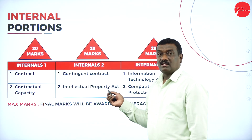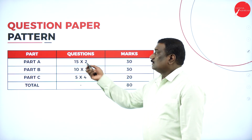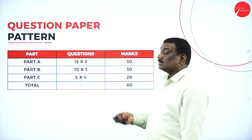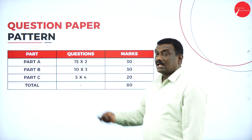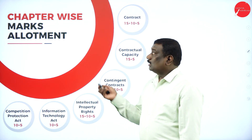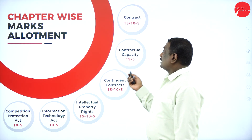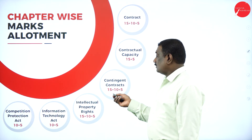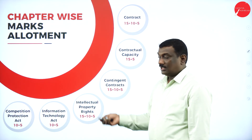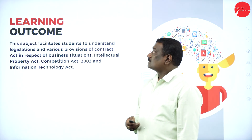The question paper has three parts: Part A carries 15 marks — two questions — totaling 30 marks; Part B carries 10 marks — three questions — totaling 30 marks; Part C carries 5 marks — four questions — totaling 20 marks; overall 80 marks. Chapter-wise marks allotment: Unit 1 Contract 30 marks, Unit 2 Contractual Capacity 20 marks, Unit 3 Contingent Contract 30 marks, Unit 4 Intellectual Property Rights 30 marks, Unit 5 IT Act 15 marks, Unit 6 Competition Protection Act 15 marks.